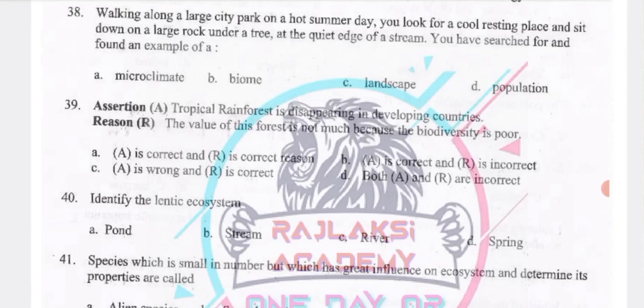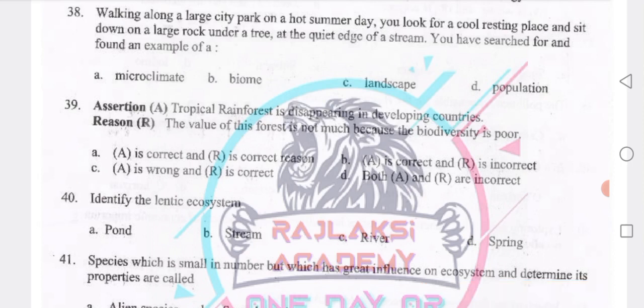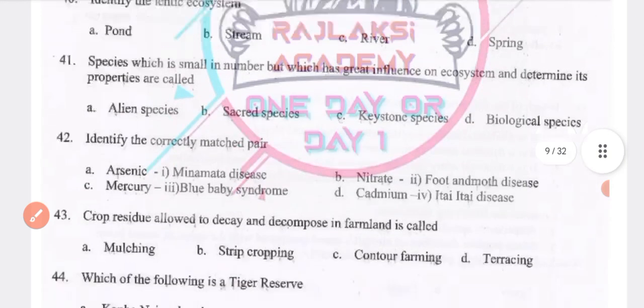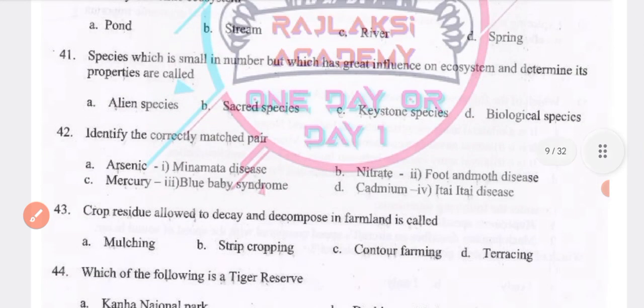Tropical rainforest is disappearing in developing countries. The statement that the value of forest is not much because biodiversity is poor — A is wrong and R is true. Identify the lentic ecosystem — the answer is spring. Next: species which are small in number but have great influence on ecosystem and determine its properties are called keystone species.